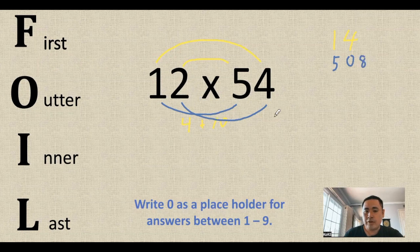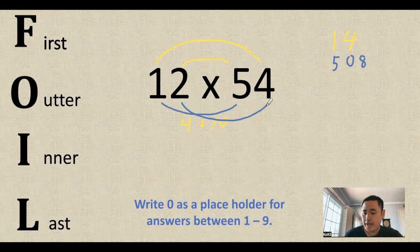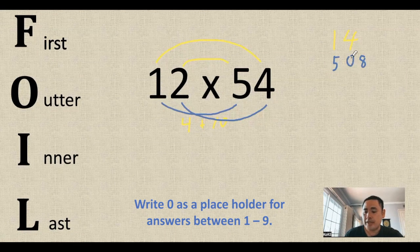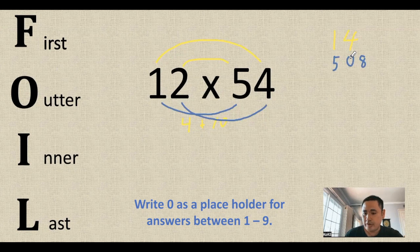So if the answer you get from multiplying the last digit is between 0 through 9, a single digit number, make sure that you put that 0 down. Otherwise, you're going to get the wrong answer.